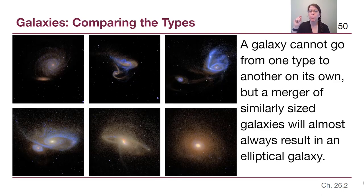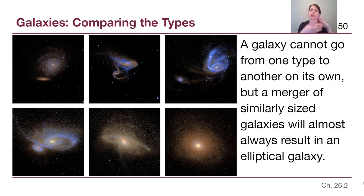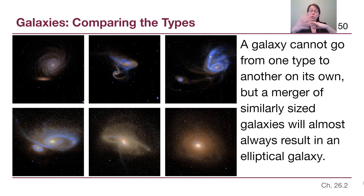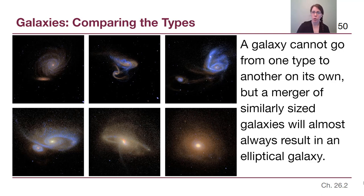However, a merger of two similar-sized galaxies will almost always result in an elliptical galaxy, because the gas and dust is either formed into stars or lost in the collision process. Any two galaxies — whether two spirals, two ellipticals, or a spiral and elliptical — if they are similar in mass, they come together, lose any net rotation they had, and create a big blob of stars forming an elliptical galaxy. That is one way for galaxies to go from one type to another: through a merger, not just by waiting long enough.